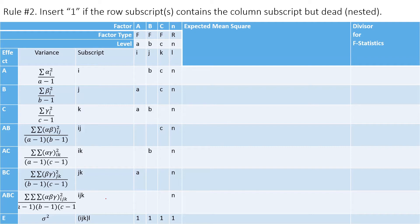Rule Number Two covers the dead or nested subscript. The replications l are nested within the treatment combination ijk, so l is called a nested or dead subscript. If the row subscript contains the column subscript and that subscript is nested, you input one. For example, all of i, j, and k are contained in the row ijk, so we enter one for each. Note that l is not dead here, but since it is a random factor, a match also gives one.